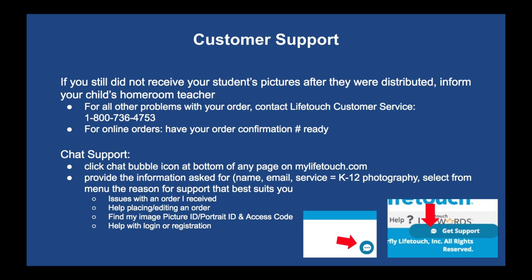You can call 1-800-736-4753 for customer service. For online orders, have your confirmation number ready when you call. There's also a chat support button on the bottom of any page on the website, whether through the app or a computer. Fill in your name, email, and service — select K-12 photography — and they'll give you options that best suit your situation.